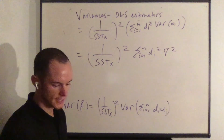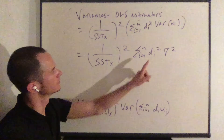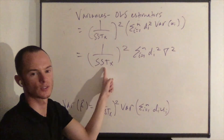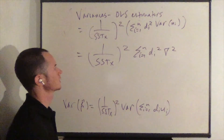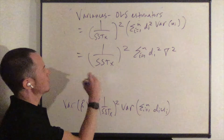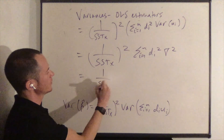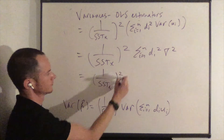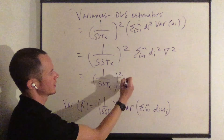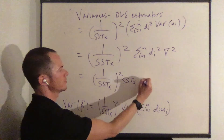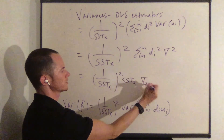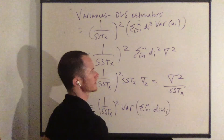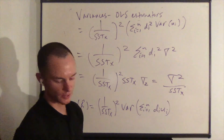And what is Σdᵢ²? That's Σ(xᵢ − x̄)², which is SST_X. So you have (1/SST_X)² × SST_X × σ², which equals σ²/SST_X — which is what we wanted to show.